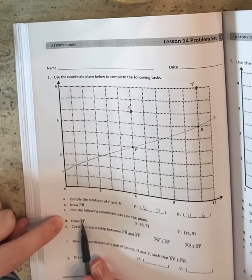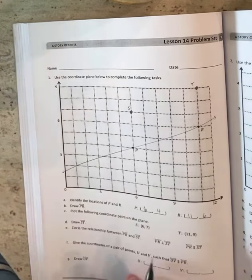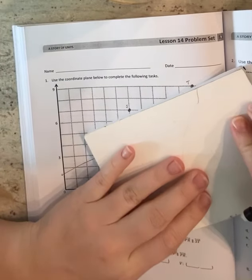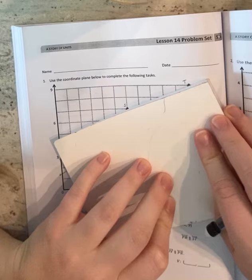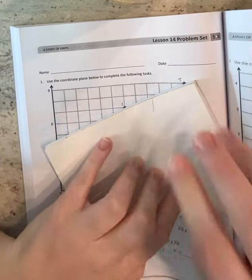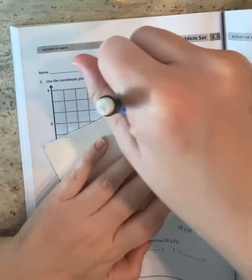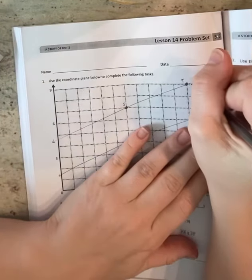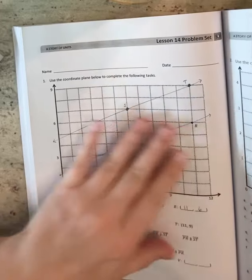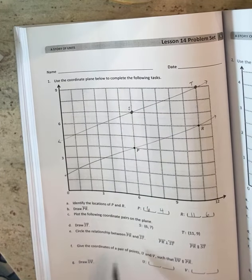Draw ST. So again, the arrows on the side, it means it's a line. So I'm going to construct that line. And again, if you guys have rulers, which I think a lot of you do use a ruler to do this. Okay. Draw ST. We already did that.